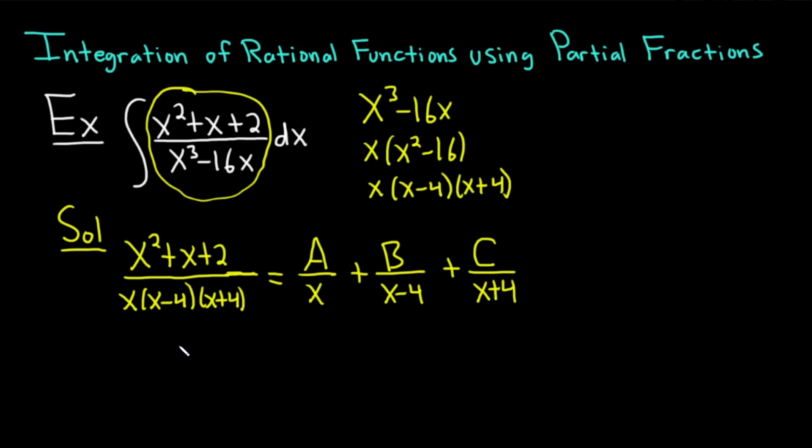All right, so now we have to solve for A, B, and C. So what we're going to do is we're basically going to multiply both sides by x times x minus 4 times x plus 4. We're going to multiply by x times x minus 4 times x plus 4. You can certainly write it on both sides of the equation, but a lot of times there's no room.